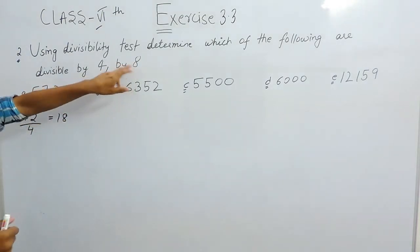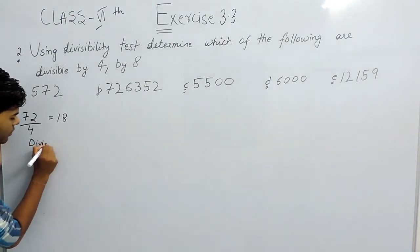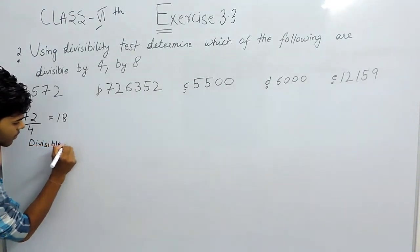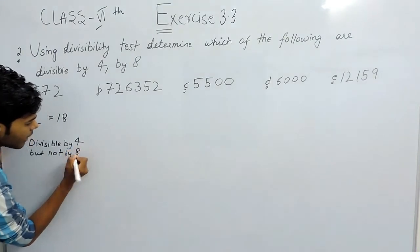Then 12, and 12 is not divisible by 8. So this number is divisible by 4 but not by 8.